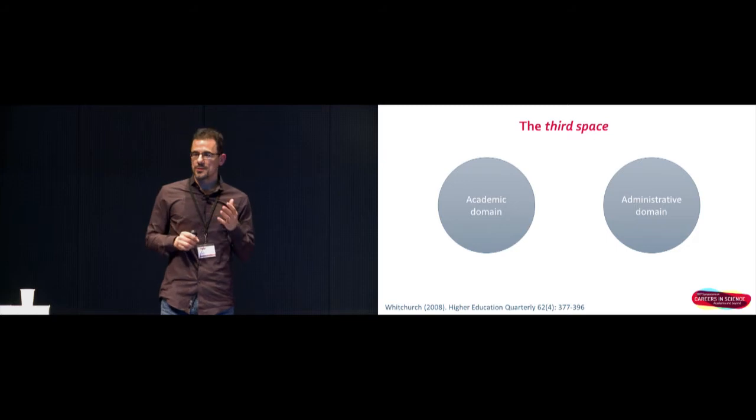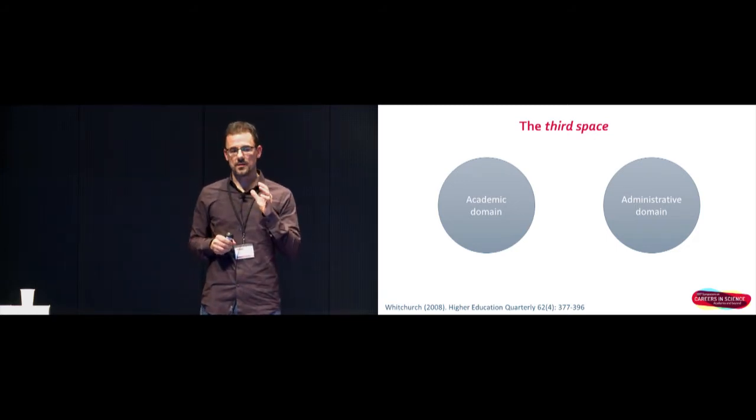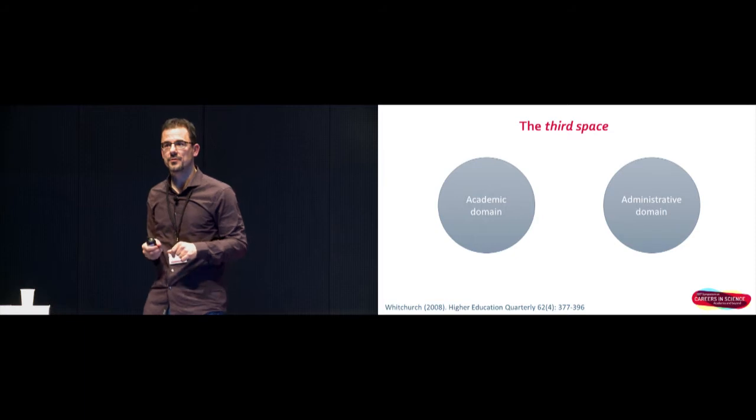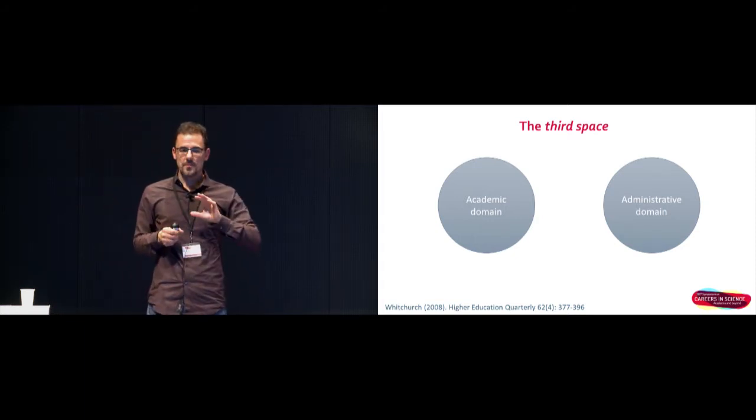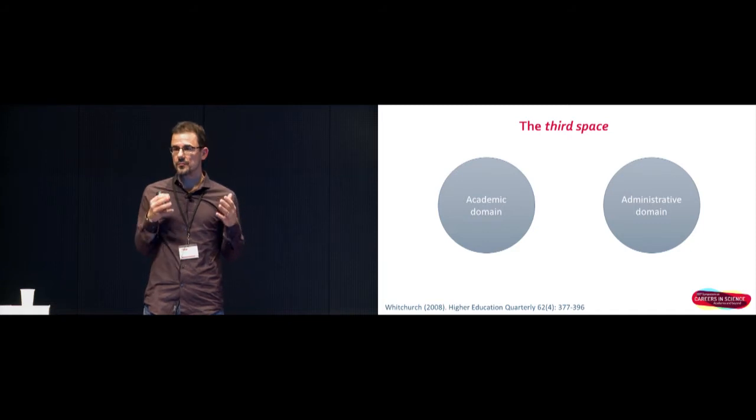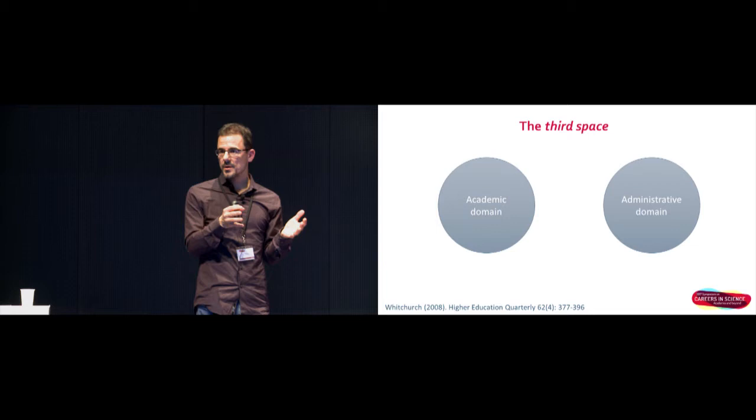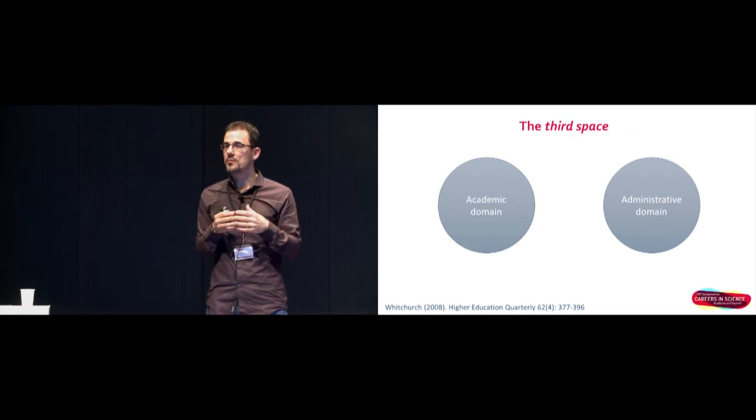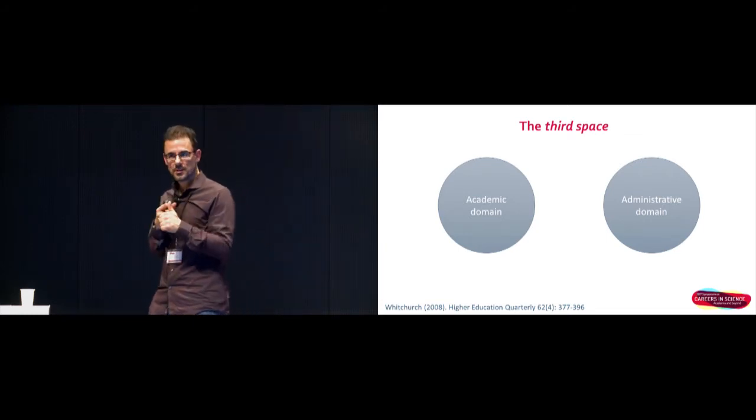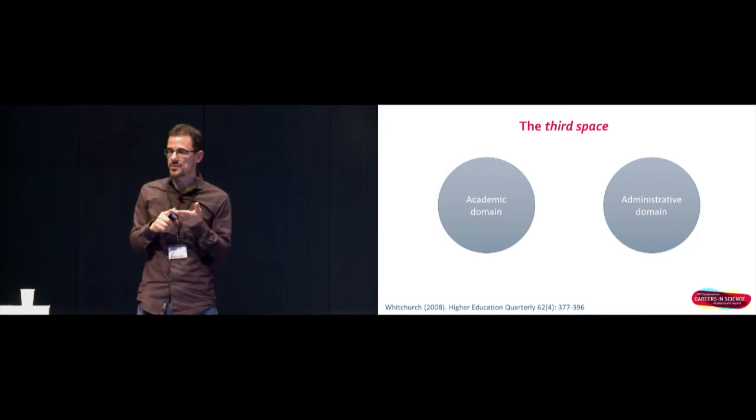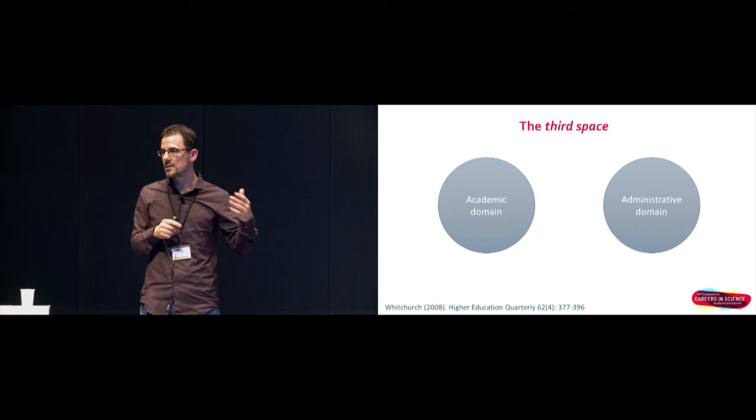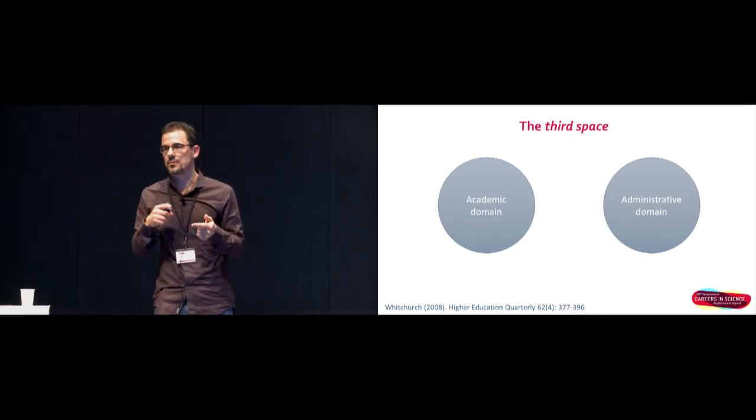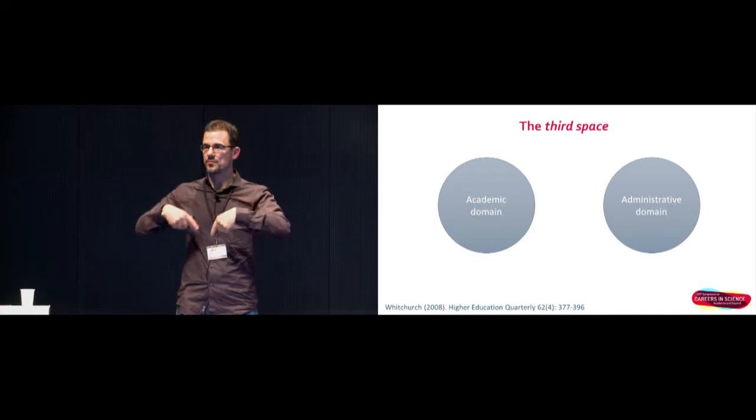So the idea is called the third space. And this concept of third space really is based on the work of Celia Whitchurch. She's a scientist and senior lecturer at University College in London. The idea is that historically, universities have been organized in two domains. There's the academic domain and the administrative domain. So the academic domain is mostly composed of professors or lecturers. They teach, they do the research, and they also have management positions, mostly on a rotational basis, as dean, as department chair, etc. And then there is the administrative domain. It can be finances, human resources, student services, etc. that make the system really run.